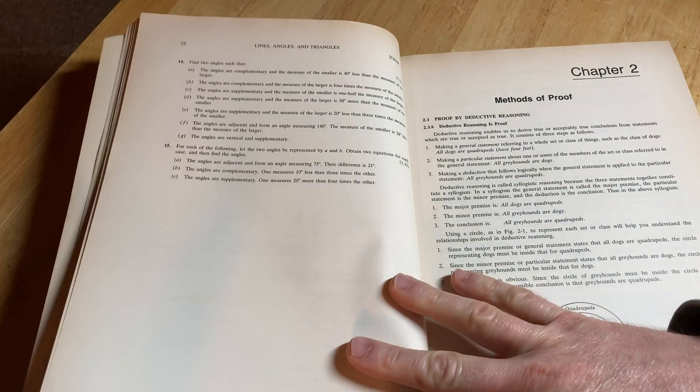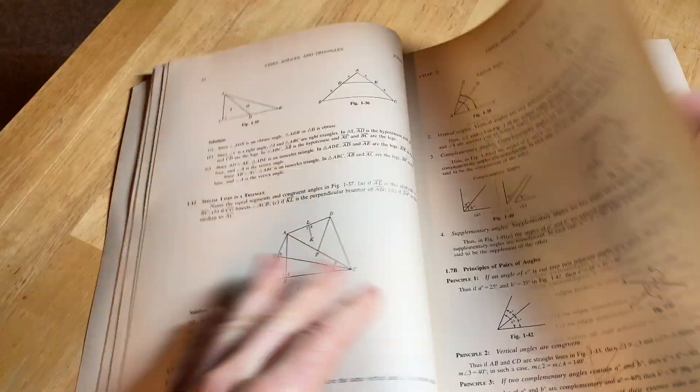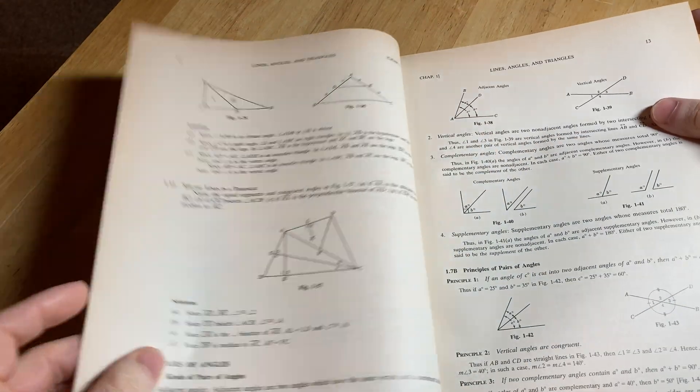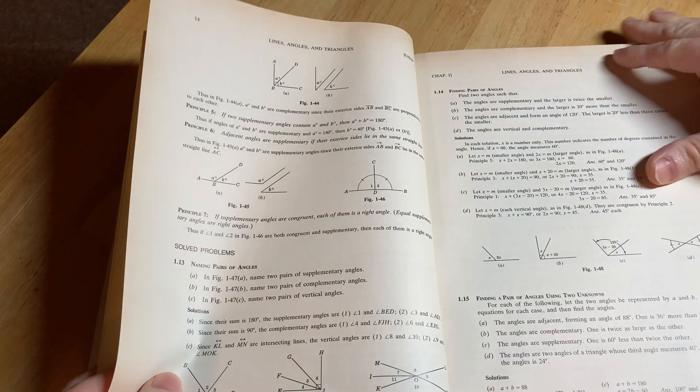And then we're in chapter two. I feel like there's some extra problems here. Let's just go back here. So, 115, 114. Yeah. So, pairs of angles. Yeah. It's just got a lot of information here. Just a lot of mathematics.